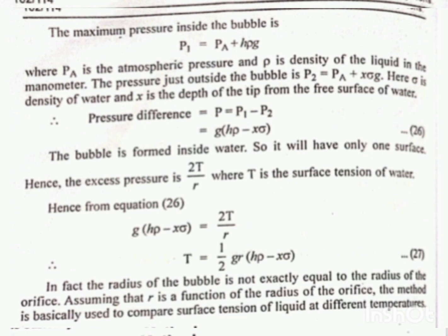The pressure just outside the bubble is P2 equals Pa plus X sigma g. Here, sigma is the density of the water and X is the depth of the tip from the free surface of the water. So the pressure difference is g times (h rho minus X sigma).